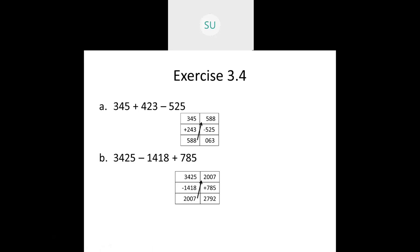For 3425 minus 1418 plus 785: first subtract 3425 minus 1418. 5 minus 8 — borrow 1 from tens, so 2 becomes 1 and 5 becomes 15; 15 minus 8 is 7. Then 1 minus 1 is 0, 4 minus 4 is 0, 3 minus 1 is 2 — giving 2007. Then add 2007 plus 785: 7 plus 5 is 12, carry 1; 1 plus 8 is 9; 0 plus 7 is 7; 2 plus 0 is 2 — answer is 2792.